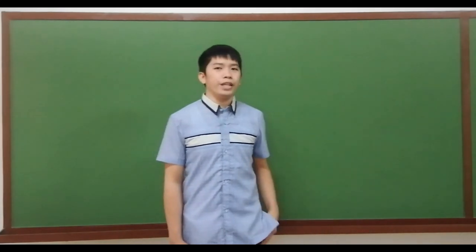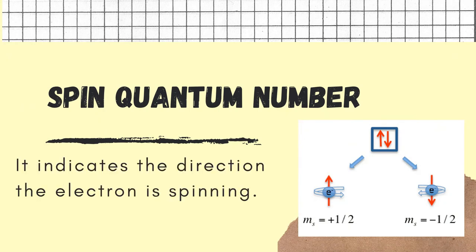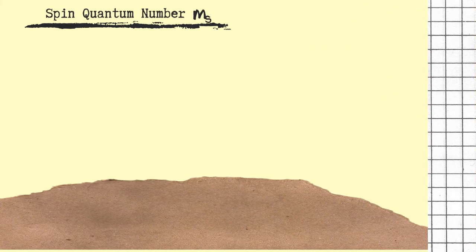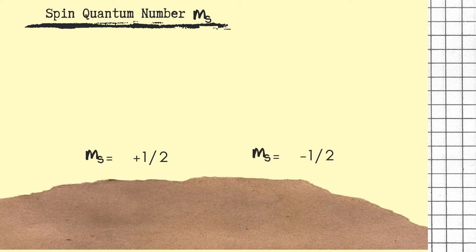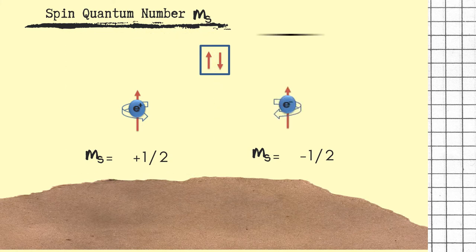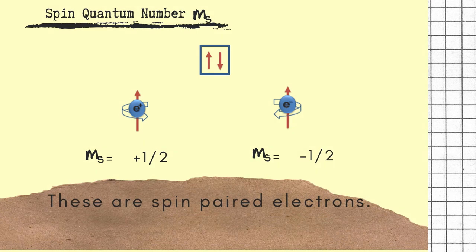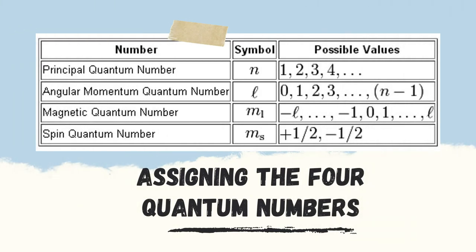The fourth quantum number is the spin quantum number represented by small letter M sub S. And it indicates the direction the electron is spinning. There are only two possible values for spin quantum number, which are the positive 1 half and the negative 1 half. When two electrons are to occupy the same orbital, then one must have an M sub S equal to positive 1 half, and the other one must have an M sub S equal to negative 1 half. These are spin-paired electrons. Let us try to assign the four quantum numbers by having an activity.